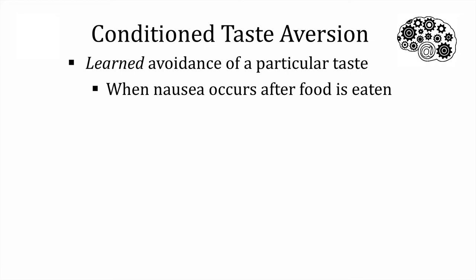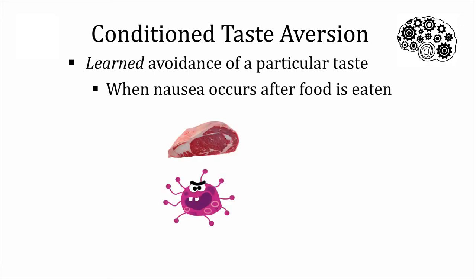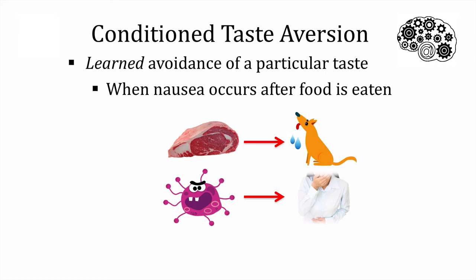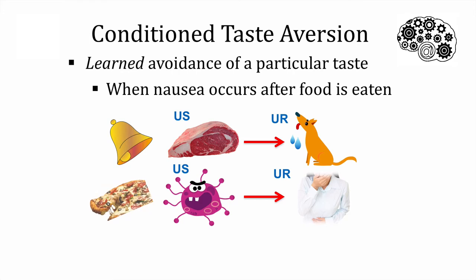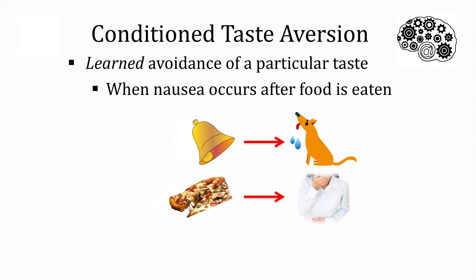If we compare what happened in Pavlov's original experiments with Sherry's learned aversion to pizza, we can see similarities. In both situations, there's a stimulus that automatically triggers an involuntary response — meat makes dogs drool, and stomach bugs make us sick. In Pavlovian terms, these are the unconditioned stimuli and unconditioned responses. In both types of learning, there's a stimulus that occurs before the unconditioned stimulus which on its own shouldn't trigger this response. The pairing of these stimuli — the bell and the pizza — with the unconditioned stimuli results in them taking on new meaning, and they can then trigger the responses on their own. In Pavlovian terms, these newly learned triggers are called conditioned stimuli, and these learned reactions are called conditioned responses.